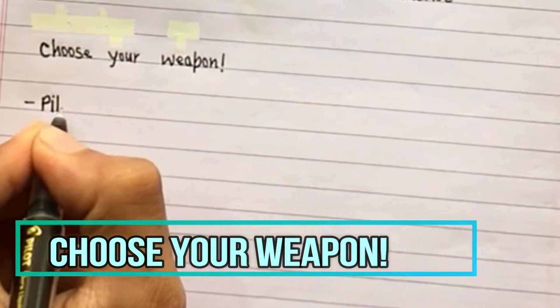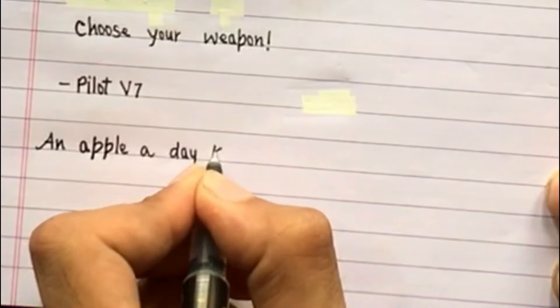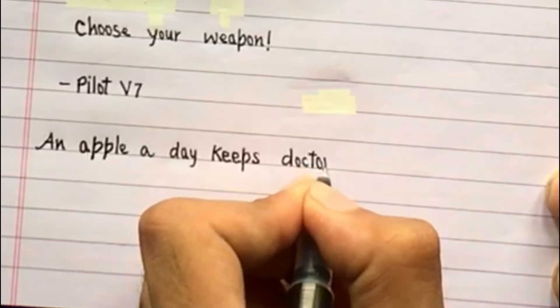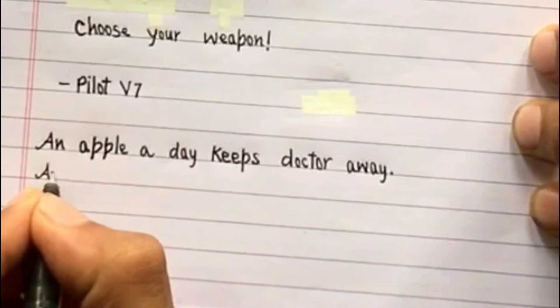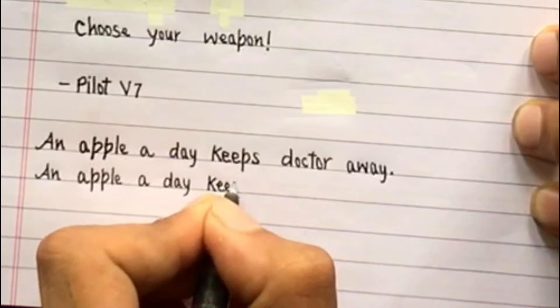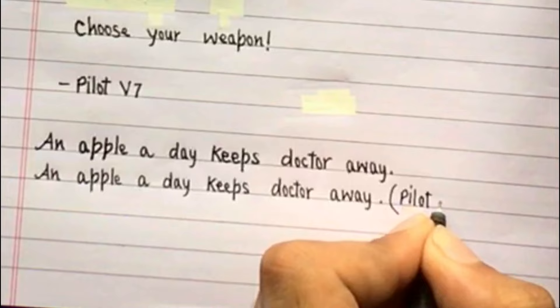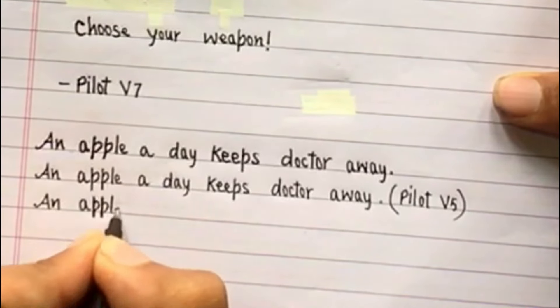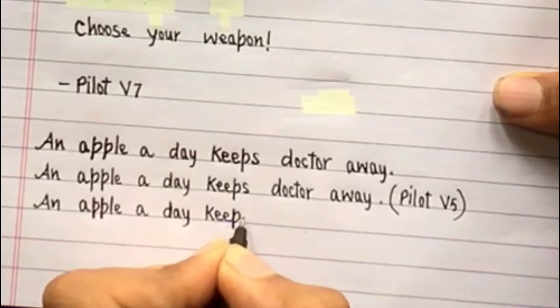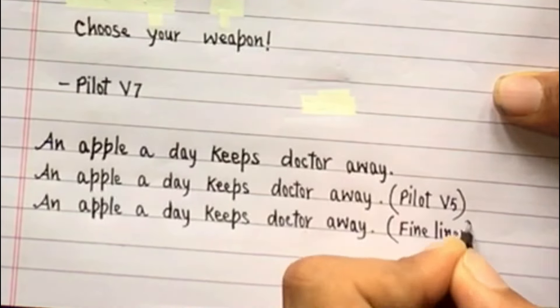First of all, to improve your handwriting, just choose your weapon—the right kind of pen with which you are going to write. Here, as you can see, I'm writing with Pilot V7, and the sentence is 'an apple a day keeps doctor away.' I'm writing the same sentence with Pilot V5. You can see the change in size as both of these have different tip sizes. Then I'm using a fineliner as you can see, writing the same sentence.